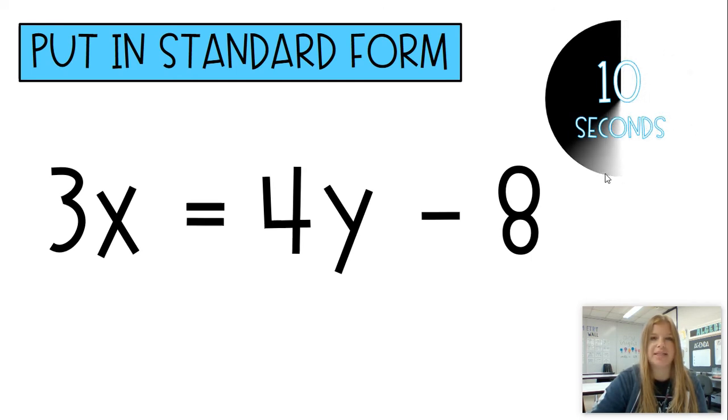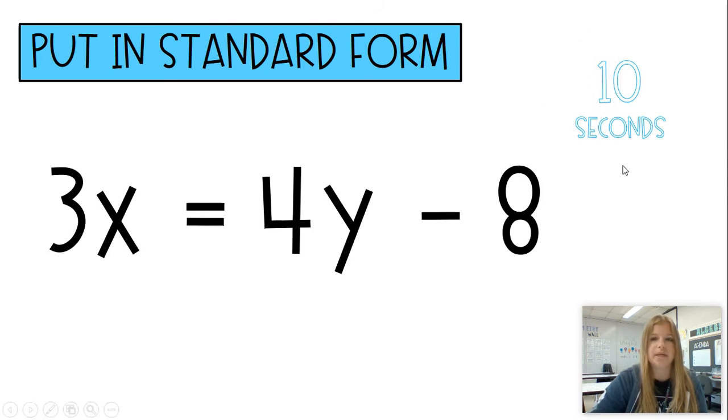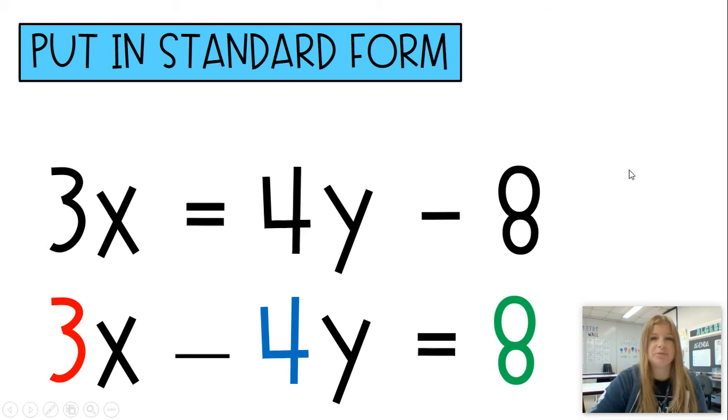So you are rewriting this in standard form. One quick step. Hopefully we saw all we needed to do was subtract 4Y on both sides of our equation. So 3X minus 4Y equals 8.